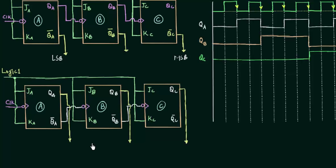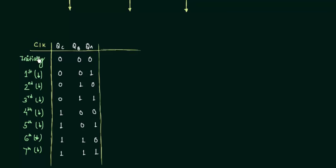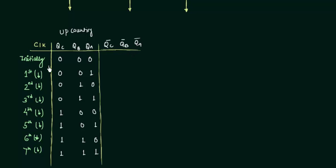Both circuits will give you down counting. I have already made a table with the clock, QA, QB, and QC outputs. The existing table shows up counting because it starts from 0 0 0 (decimal 0) and ends at 1 1 1 (decimal 7). If I take QC complement, QB complement, and QA complement, initially the values are 0 0 0 and taking the complement gives 1 1 1, and taking the complement of 0 0 1 gives 1 1 0.